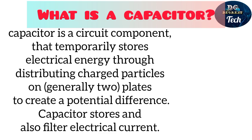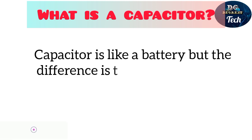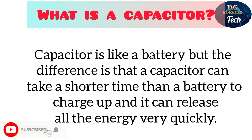Number two: the capacitor. A capacitor is a circuit component that temporarily stores electrical energy by distributing charged particles on generally two plates to create a potential difference. Capacitors store and also filter electrical current. A capacitor is like a battery, but the difference is that a capacitor can take a shorter time than a battery to charge up.